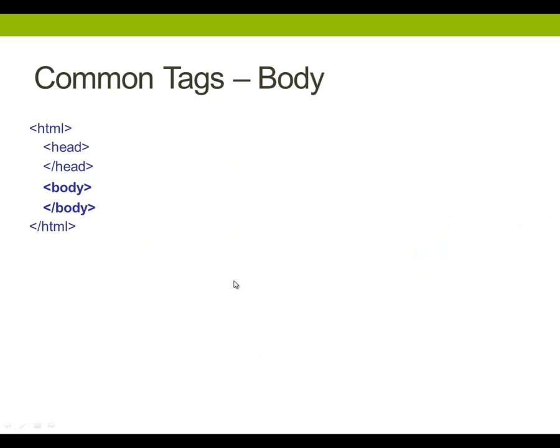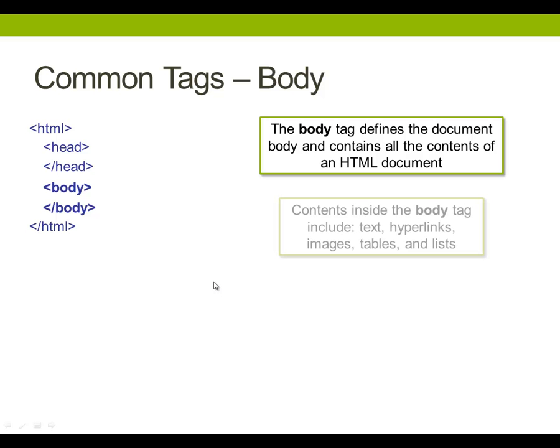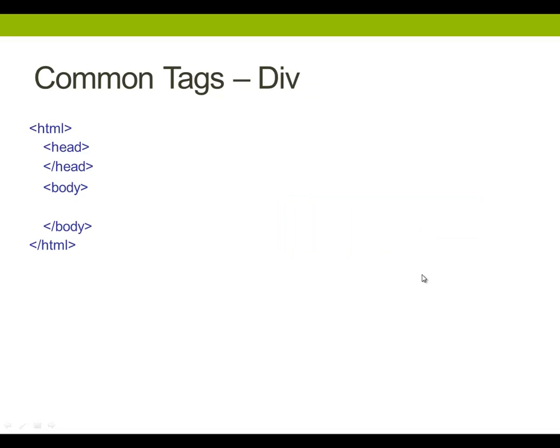Alright, so that was the first big tag, which was the head tag. There are a lot more tags you can put in there, like metadata. The next big tag is the body tag, and the body tag contains all of the information — the content of your web page. It can include tags like text, hyperlinks, images, tables, and lists.